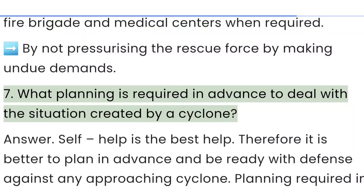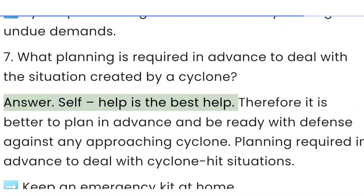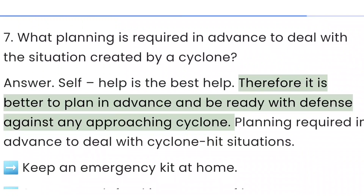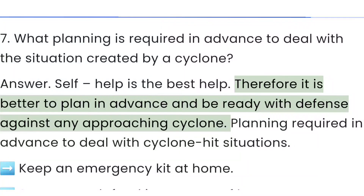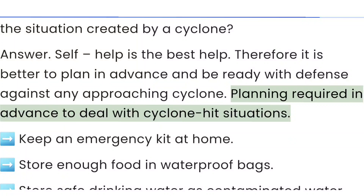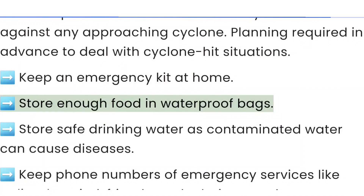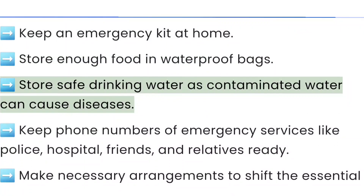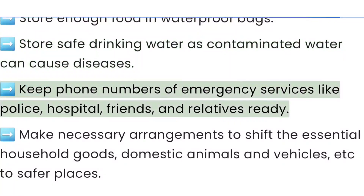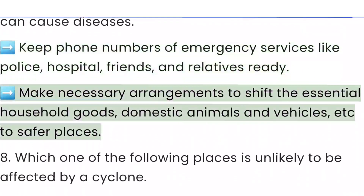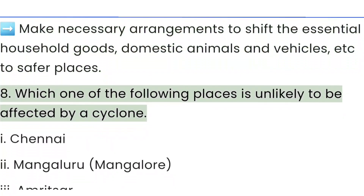Question 7: What planning is required in advance to deal with the situation created by a cyclone? Answer: Self-help is the best help, so it is better to plan in advance. Planning required includes: keep an emergency kit at home, store enough food in waterproof bags, store safe drinking water as contaminated water can cause diseases, keep phone numbers of emergency services like police, hospital, friends and relatives ready, and make necessary arrangements to shift essential household goods, domestic animals and vehicles to safer places.